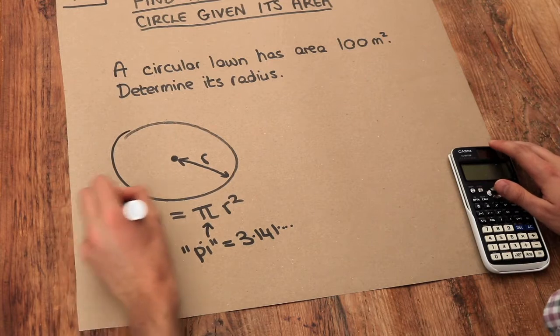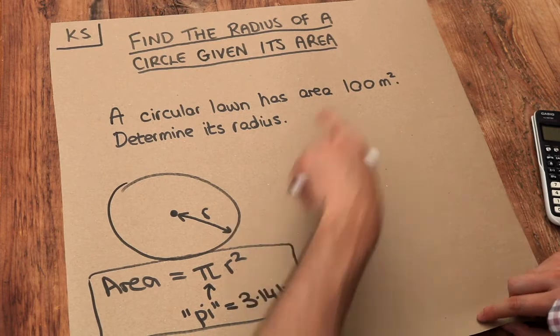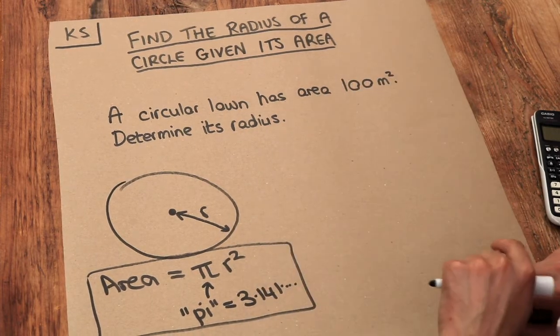So that's the formula we need. But this time we don't have the radius, we've got the area and we need to use the area to find the radius.